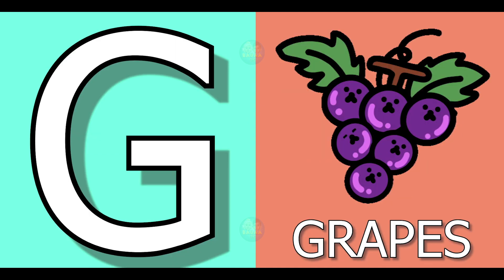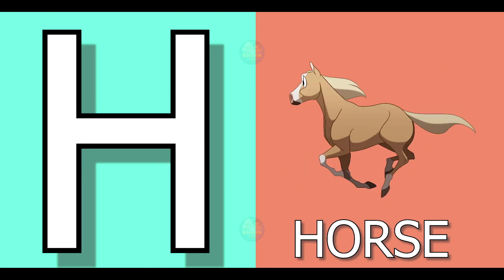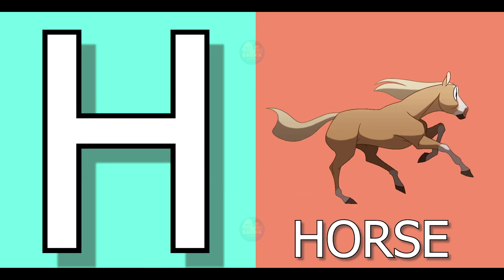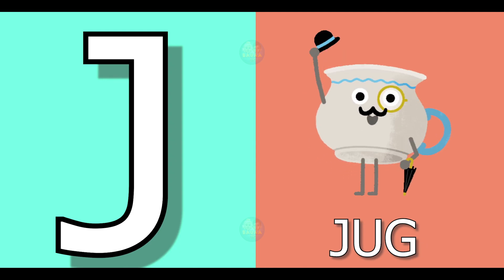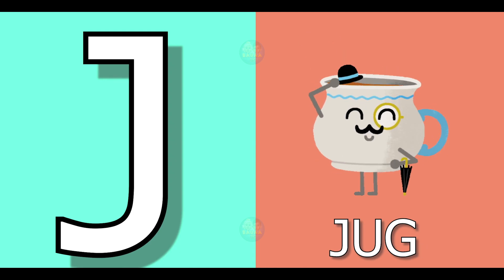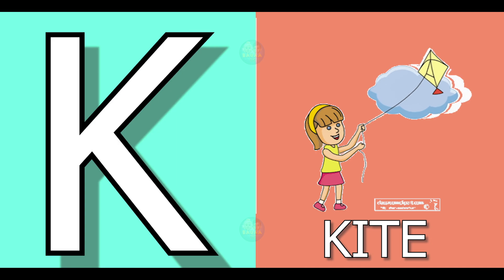G for grapes, grapes means angur. H for horse, horse means ghoda. I for ice cream, ice cream means ice cream. J for jag, jag means jag. K for kite, kite means batang.